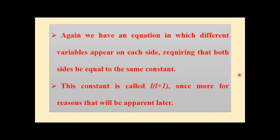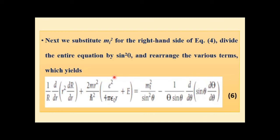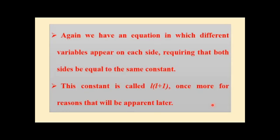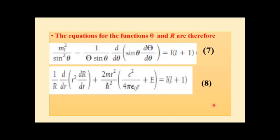Again, we have an equation in which different variables appear on each side, requiring both sides to equal the same constant. On the left-hand side only r appears, and on the right-hand side only theta appears, so each side must equal a constant l(l+1). Equating the theta terms gives ml²/sin²θ equal to l(l+1), and equating the r terms gives equation 8.